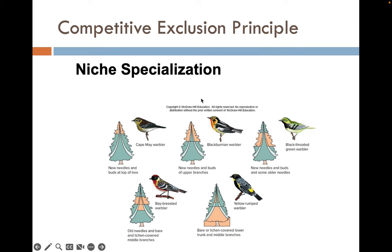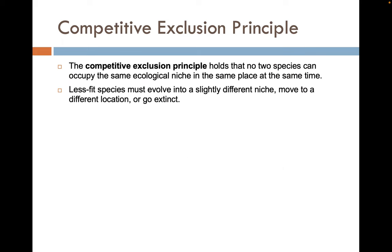If the competitive exclusion principle weren't true, there'd be no reason for all these different warbler species — they could just coexist in the same place. So the competitive exclusion principle is actually a force that helps drive evolution and speciation of new species.